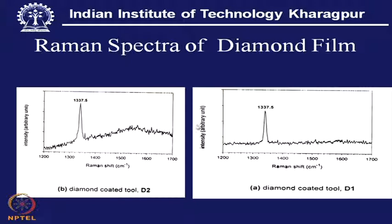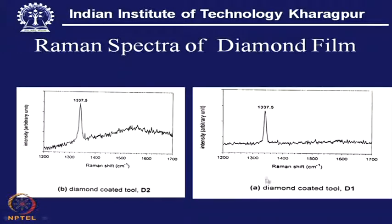Under various conditions — with different substrate, different seeding — we can have high-growth coating, grain fineness, and many measures to improve yield, adhesion, or the basic property. But finally, before going to any further step, this Raman diagram will definitely point in the right direction — whether we have good diamond or poorly grown diamond.